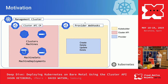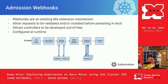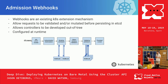Admission webhooks are an existing mechanism. They allow Kubernetes to validate as well as mutate CRDs before they're persisted in etcd. Webhooks can be developed out of tree and configured at runtime. The HTTP request flow goes to the Kubernetes API server, through authentication, then a number of mutating webhooks are called. After object schema validation and validation of the mutated webhook, the object is persisted in etcd.